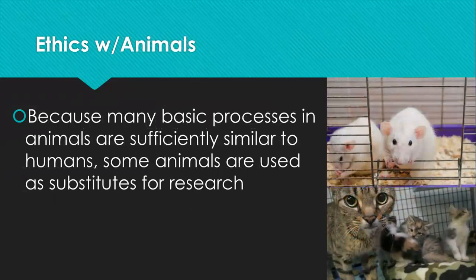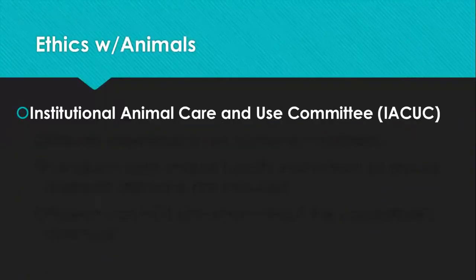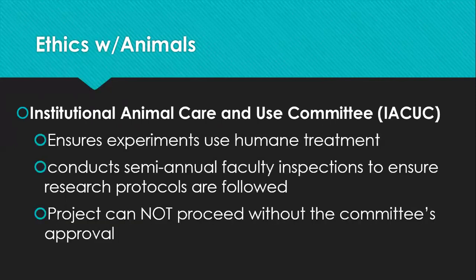There are also ethics with animals. Because many basic processes in animals are sufficiently similar to humans, it can make sense to use animals in place of humans to gather more data about behavior. When studying animal participants, research must pass approval from the Institutional Animal Care and Use Committee — the IACUC — which ensures experiments use humane treatment and conducts semi-annual facility inspections to ensure all protocols are followed. No project can proceed without the IACUC's approval.